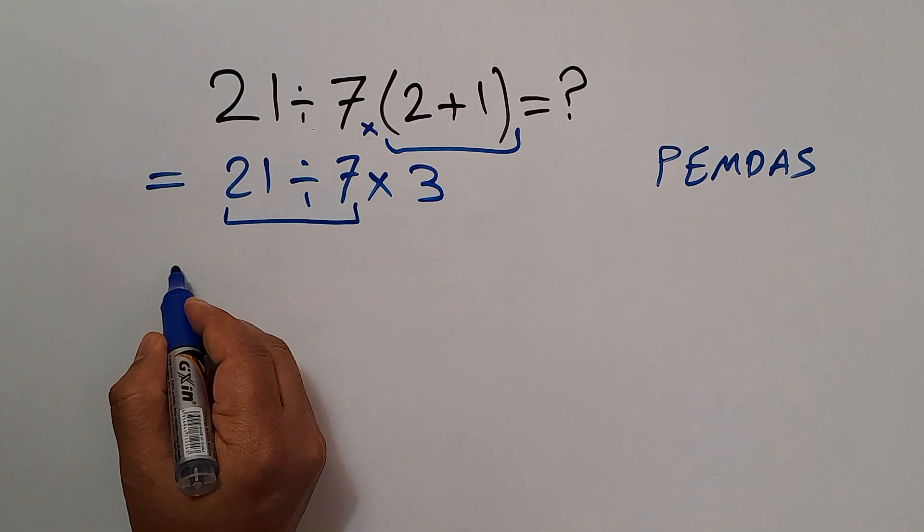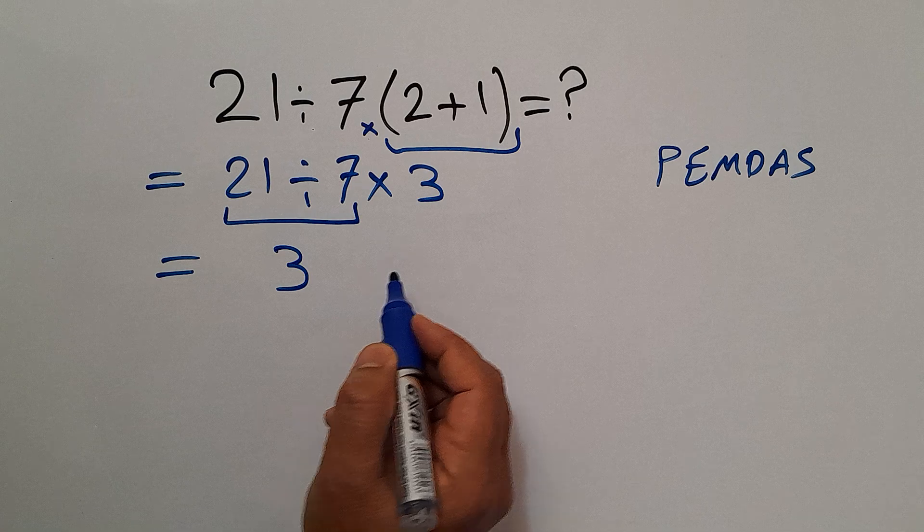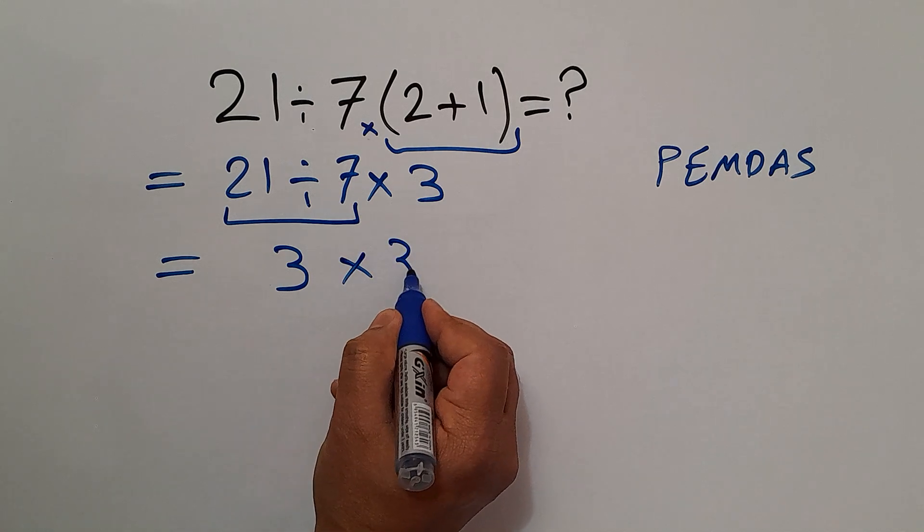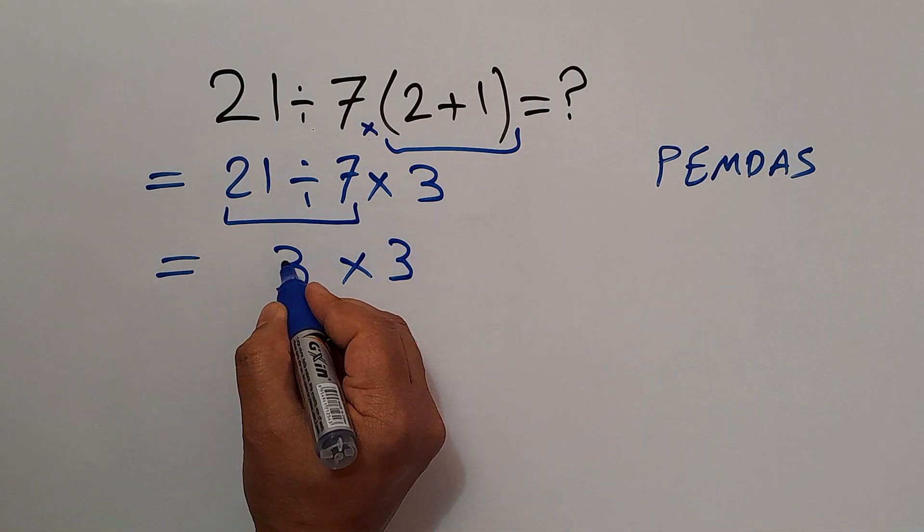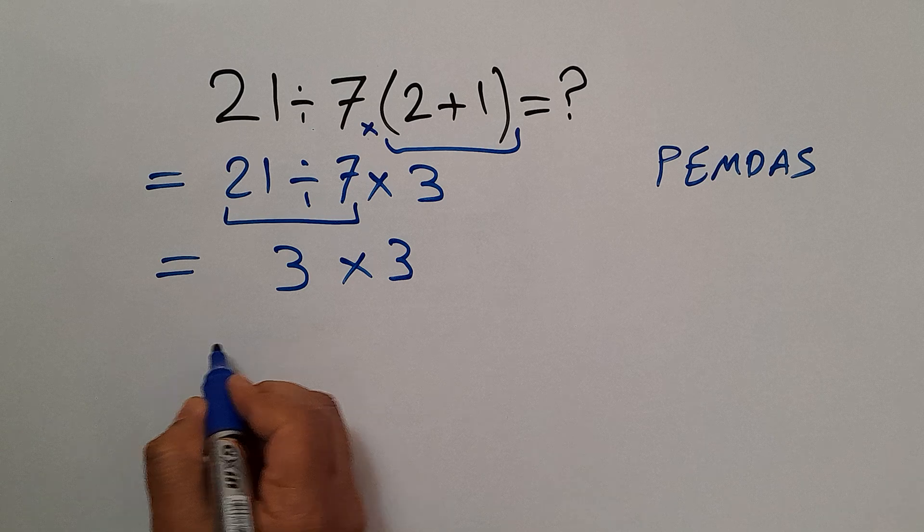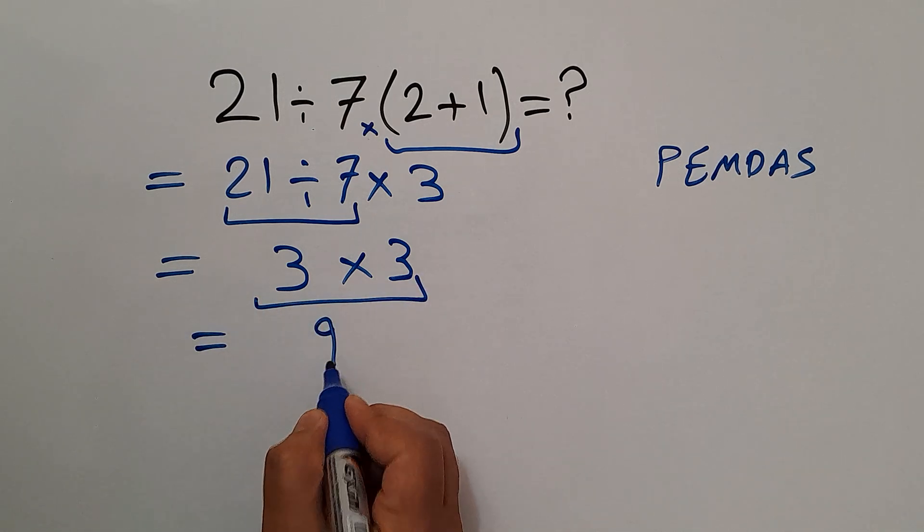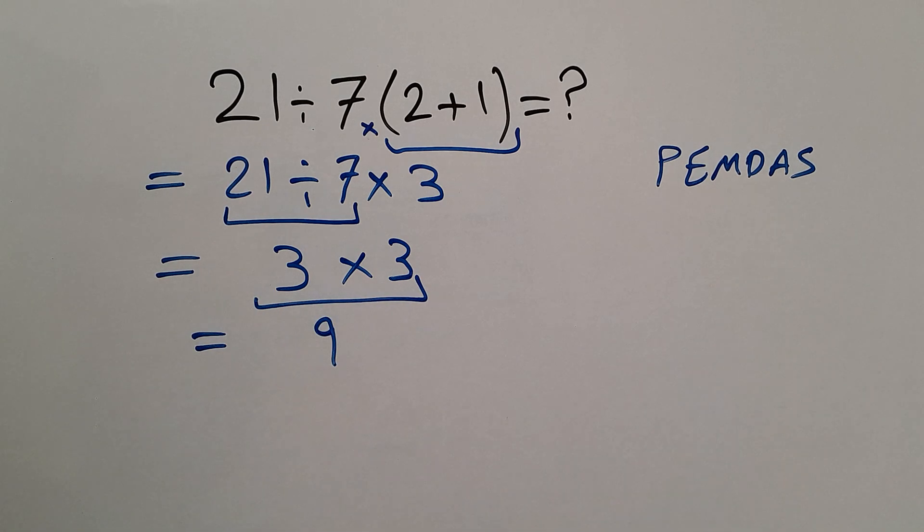So 3 times 3 which equals 9. So our final answer to this problem is just 9.